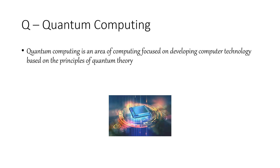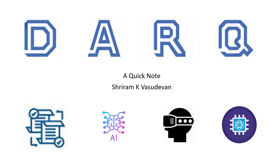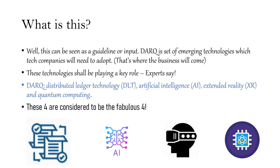So we have seen what DARQ is: D is Distributed Ledger, A represents Artificial Intelligence, R represents Extended Reality, and Q represents Quantum Computing. Thank you very much — I hope you liked the session. If you like the channel and the content, please subscribe and give a thumbs up.